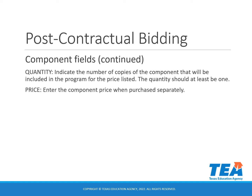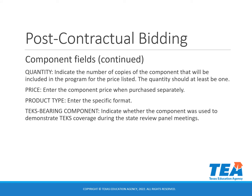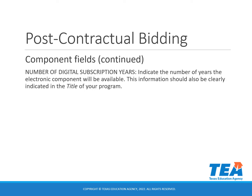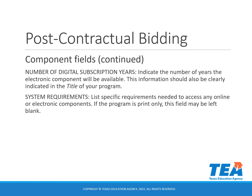In the price field, you will enter the component price when purchased separately. You will select the specific format for the product type, then indicate whether the component was used to demonstrate TEKS coverage during the State Review Panel meetings using the TEKS Bearing Component field. For the digital subscription, select yes if the component contains any online or electronic components available for a specific number of years; select no if it does not. The number of digital subscription years indicates how long the electronic components will be available — this should also be clearly indicated in the title. You will list specific requirements for online or electronic components in the system requirements field; if the program is print only, this field may be left blank.